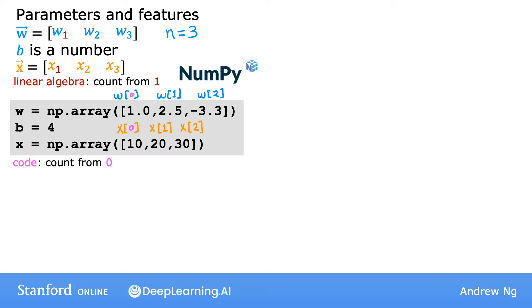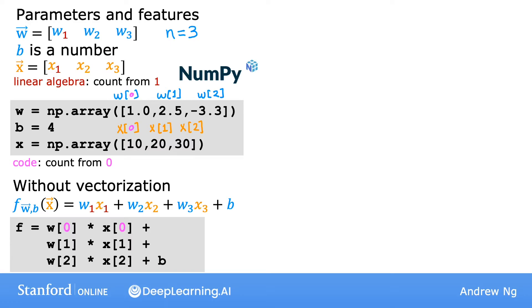Now let's look at an implementation without vectorization. Without vectorization, for computing the model's prediction in code it would look like this: you take each parameter w and multiply it by its associated feature. Now you could write your code like this, but what if n isn't three but instead n is a hundred or a hundred thousand? It's both inefficient for you to code and inefficient for your computer to compute.